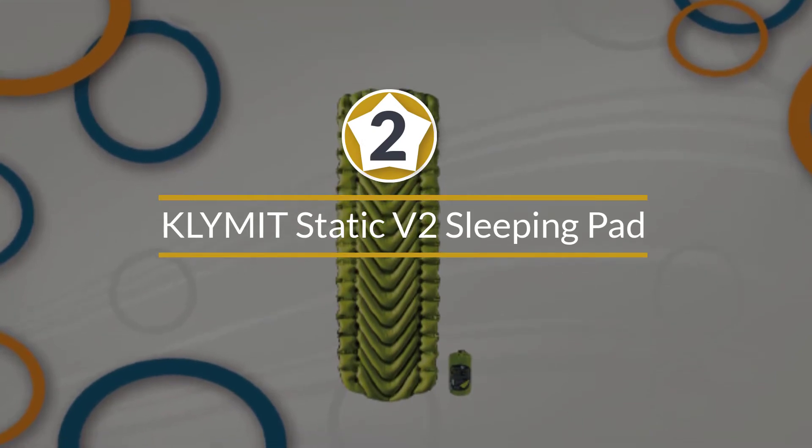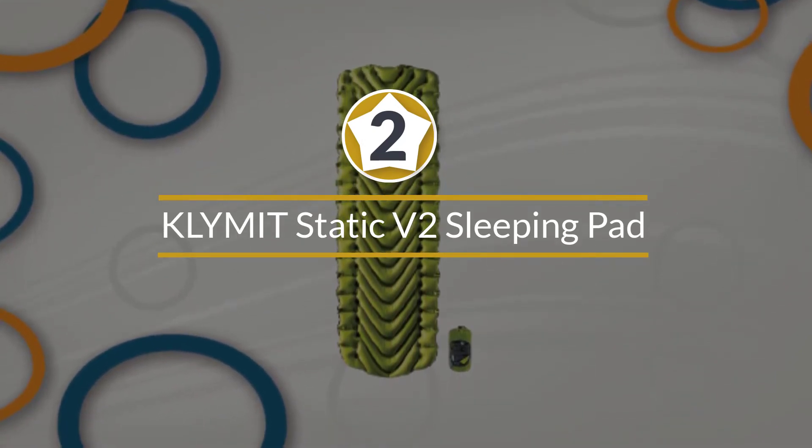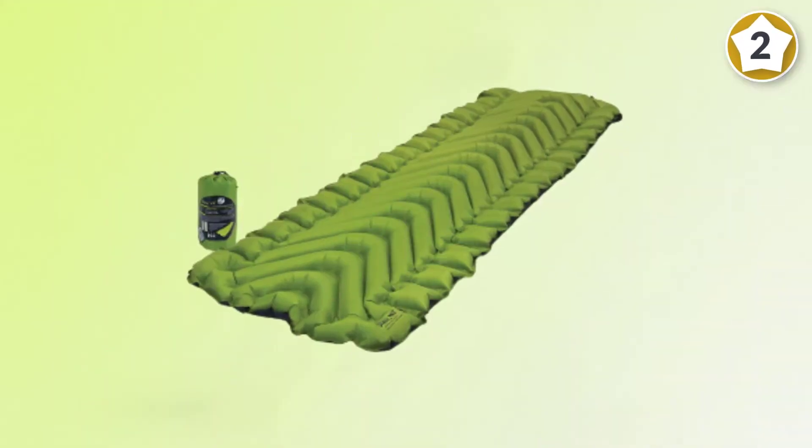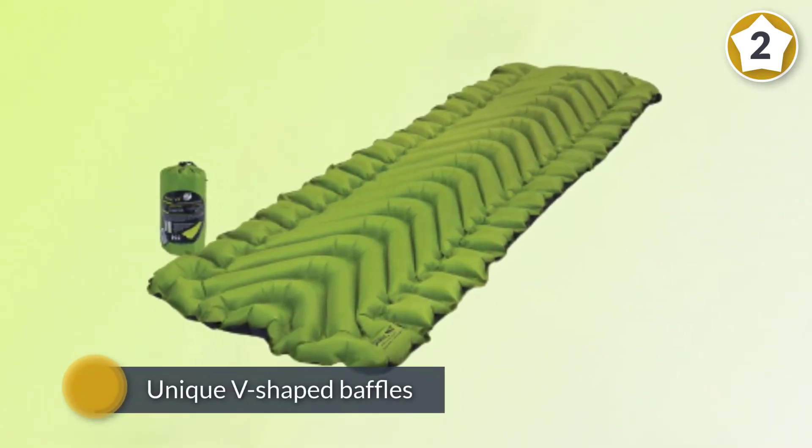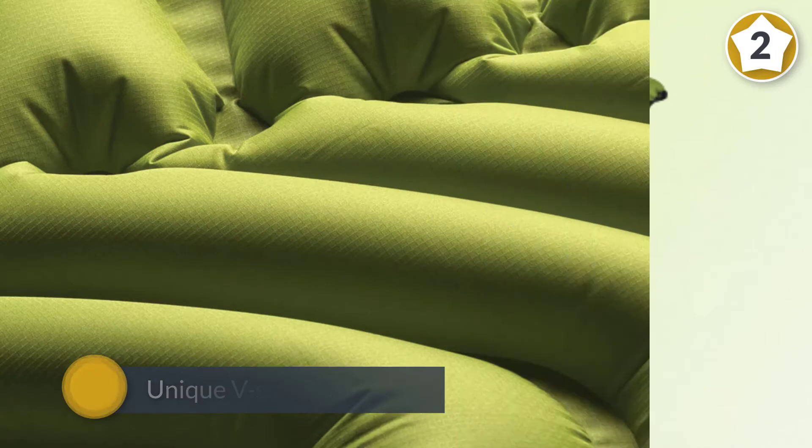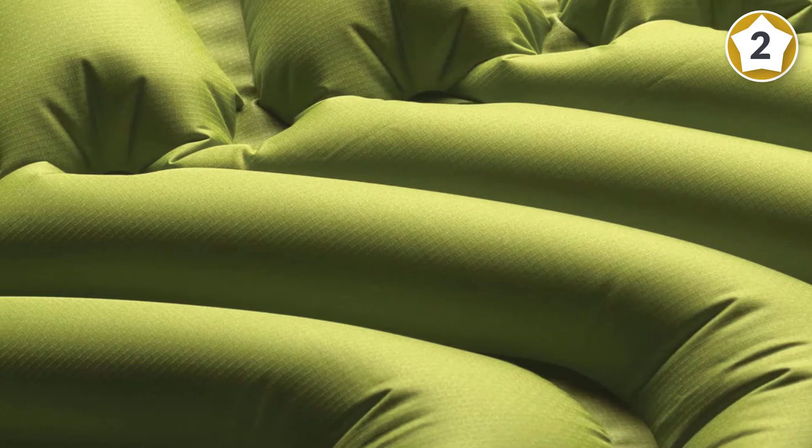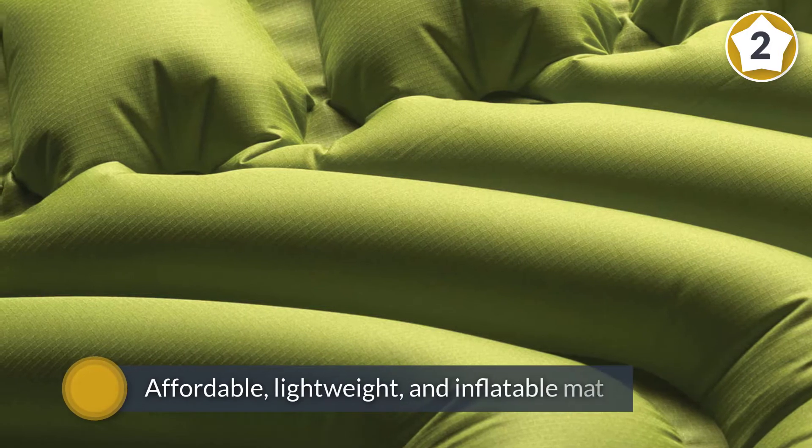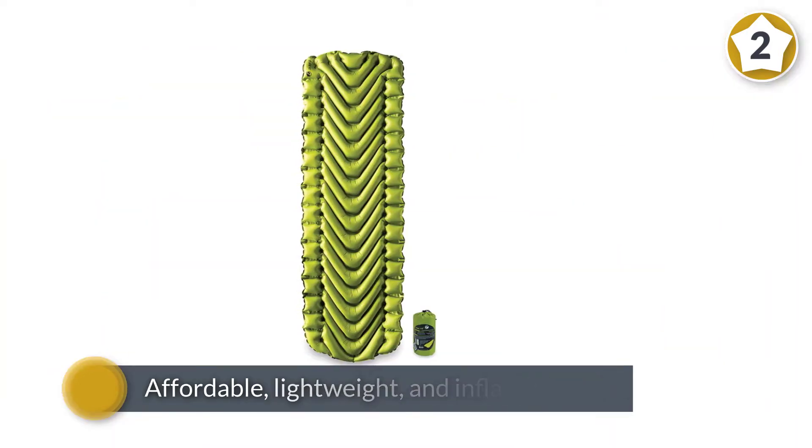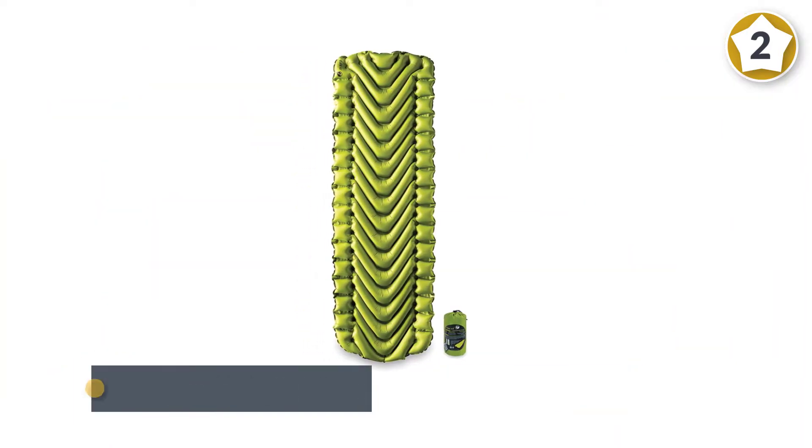Number 2. Climate Static V2 Sleeping Pad. The Climate Static V2 is a budget-friendly sleeping pad with a lightweight design. Its unique V-shaped baffles were surprisingly comfortable for both back sleepers and side sleepers. Praised as an affordable, lightweight, and inflatable mat, the Static V2 has become extremely popular.